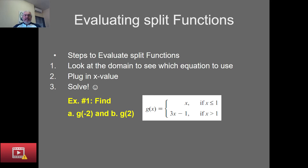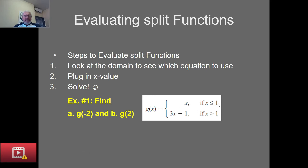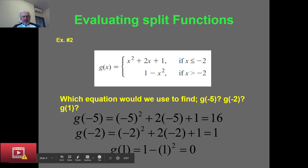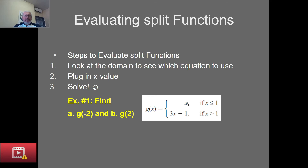To evaluate a split function, first look at the domain to see which equation to use, then plug in the value into the right equation. For example: g(x) = x when x ≤ 1, or 3x − 1 when x > 1. To find g(−2), since −2 is less than or equal to 1, we substitute into the top: g(−2) = −2. For g(2), since 2 > 1, we use the bottom: g(2) = 3(2) − 1 = 5.